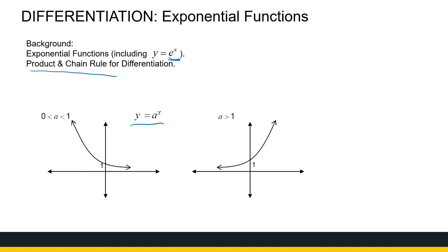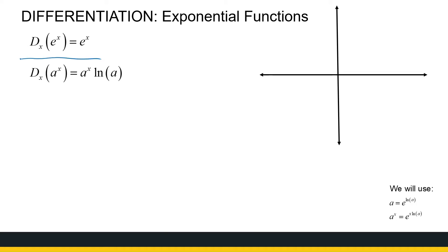The derivative of e to the power x — our favorite derivative — is again e to the power x. That's very nice because it's not complicated to differentiate. What's interesting is if I look at the graph of e to the power x, for anywhere on this graph the gradient of the tangent line is equal to the y value. So if x equals 1, my y value is e to the power 1, and that's also the gradient of the tangent line. If x equals 0, my y value is 1, and that's also the gradient of the tangent line. So I can basically just read off the value of the gradient of the tangent line by looking at my y values.